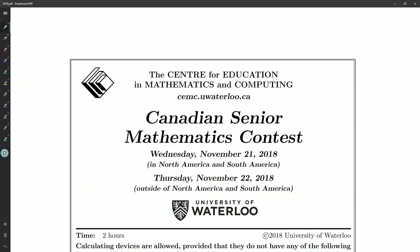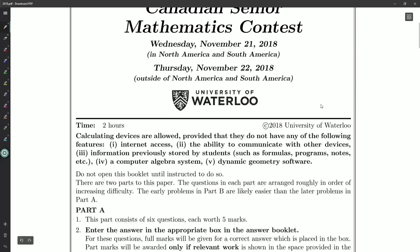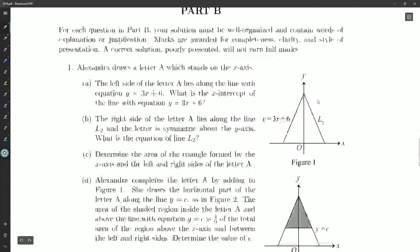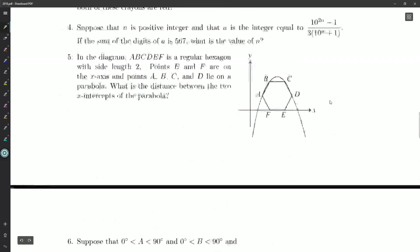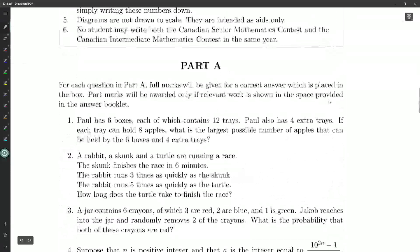So this is what the paper looks like. We're going to be going through one question at a time. Now if you want to try this out, give yourself two hours. There's a two hour time limit right there. There are nine questions, six final answer required questions, each worth five marks. And then there's a slightly harder part B questions down here that require written solutions. We'll get to those eventually, but we're going to start off in this video with question number one.